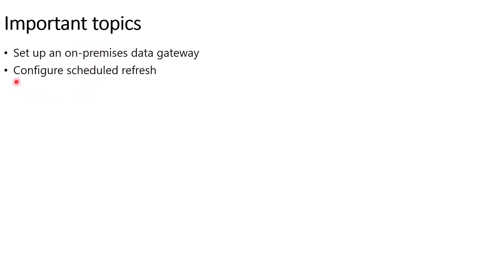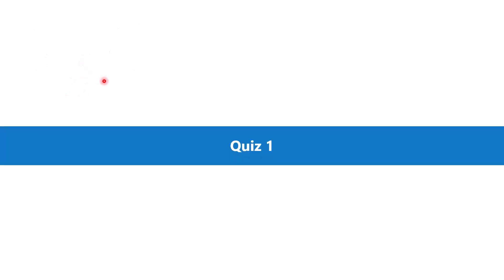The last important thing is to configure a scheduled refresh. We saw the whole process where scheduling of a dataset can be done inside the Power BI service, but I would strongly recommend that once you install your gateway, you also configure a scheduled refresh by setting up the required options inside the Power BI service. This is a good exercise for understanding how the gateway and the scheduled refresh process work in tandem.